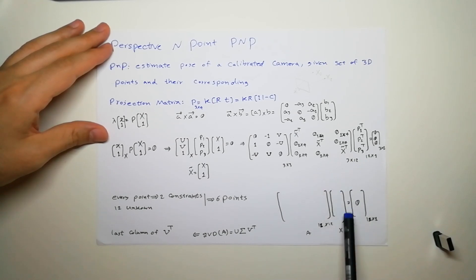Here we have our unknown matrix 12 by 1, and here it gives us an 18 by 1 matrix which is all zeros.